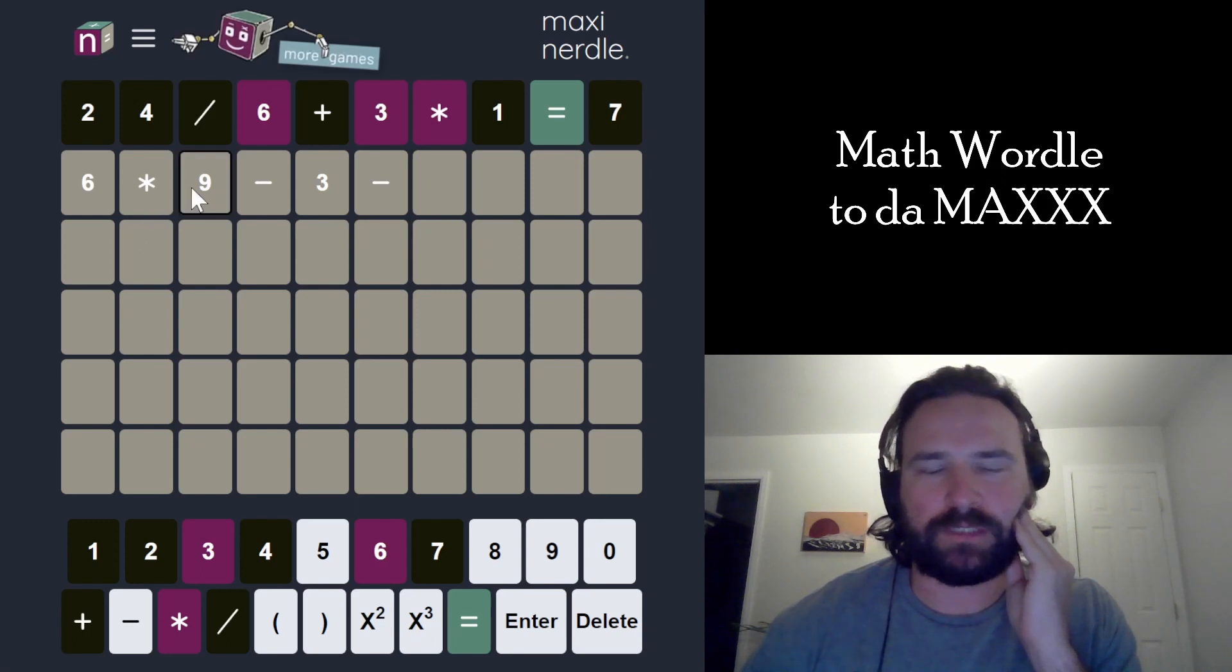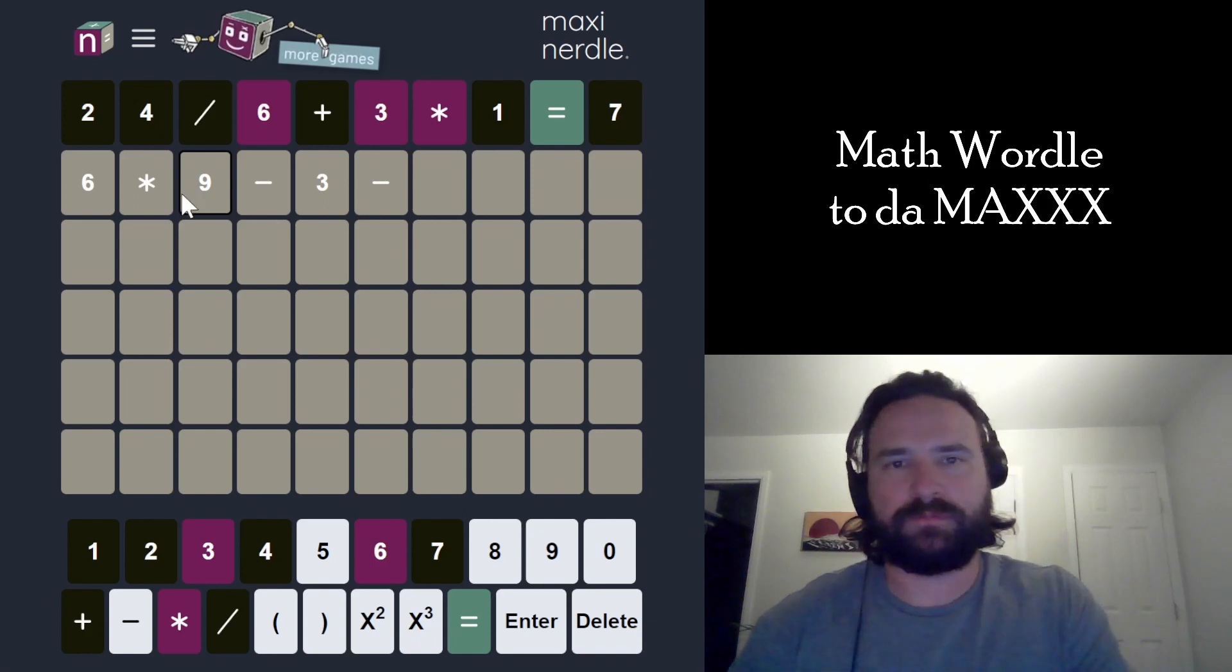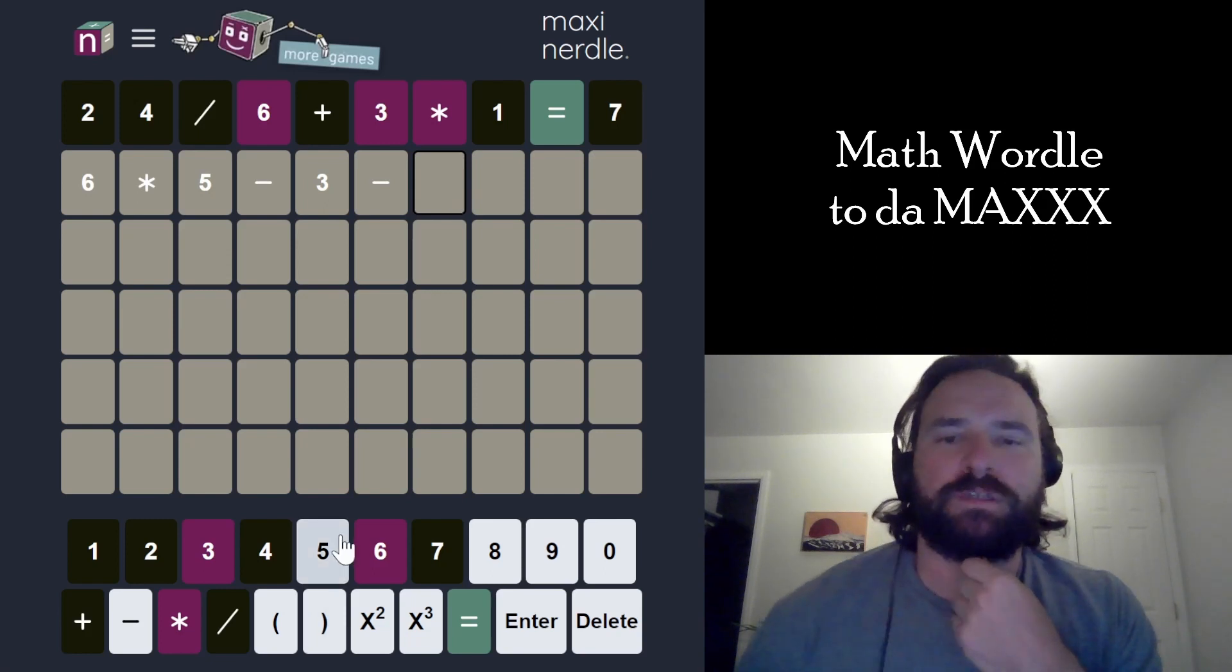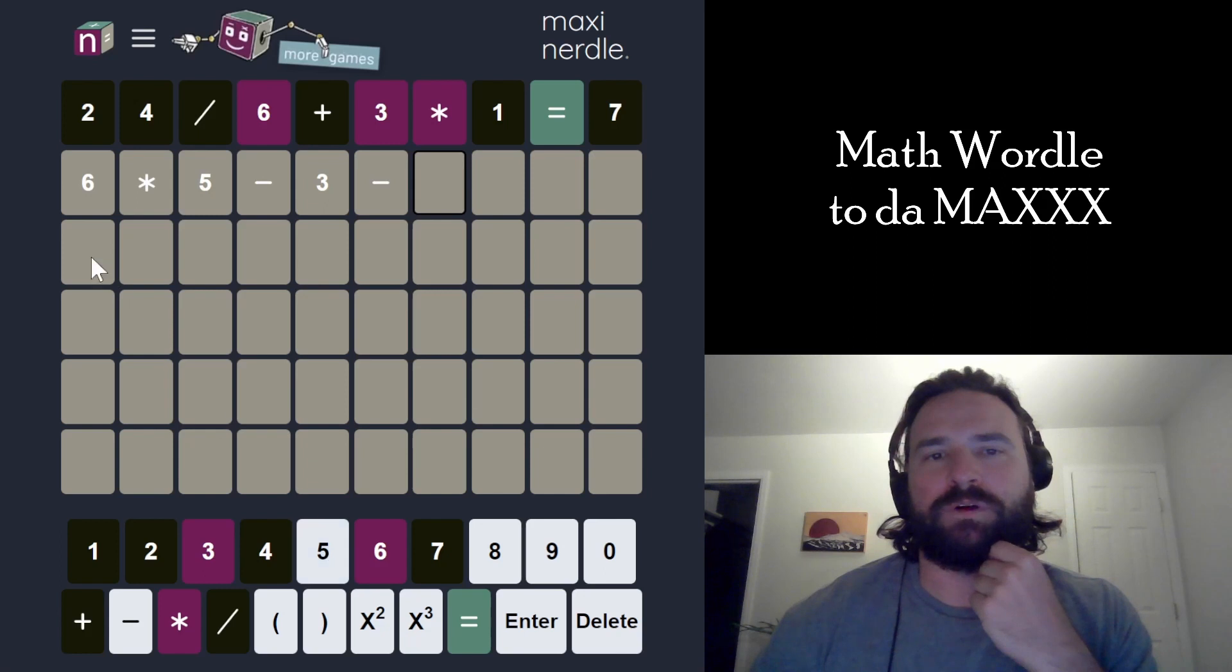6 times 8 is 48. I mean, I could do like 6 times 5 minus 3. That's not going to work either. I want to do 5 squared is kind of what I'm thinking, because that's 25 and stays pretty small. Or I could do 6 squared and subtract 36.